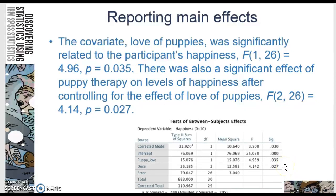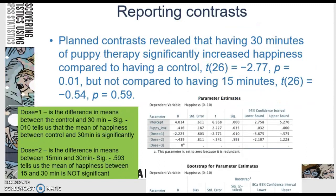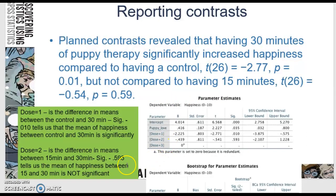This tells us that when we controlled for the love of puppies, there was still a significant effect on happiness. Then we did contrasts — remember your contrasts had to do with your parameter estimates. Planned contrasts revealed, because we know there's a dose response, that having 30 minutes of puppy therapy significantly increased happiness compared to having the control. Here's my T-value: T(26) = -2.77, and here's my probability value.